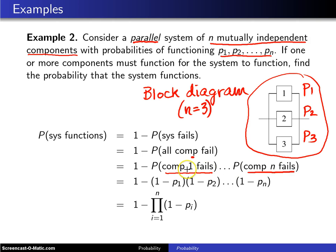And the probability of component one failing is one minus P1. The probability of component two failing is one minus P2 all the way up to one minus Pn. This multiplication here occurs because of the independence, mutual independence of the components.